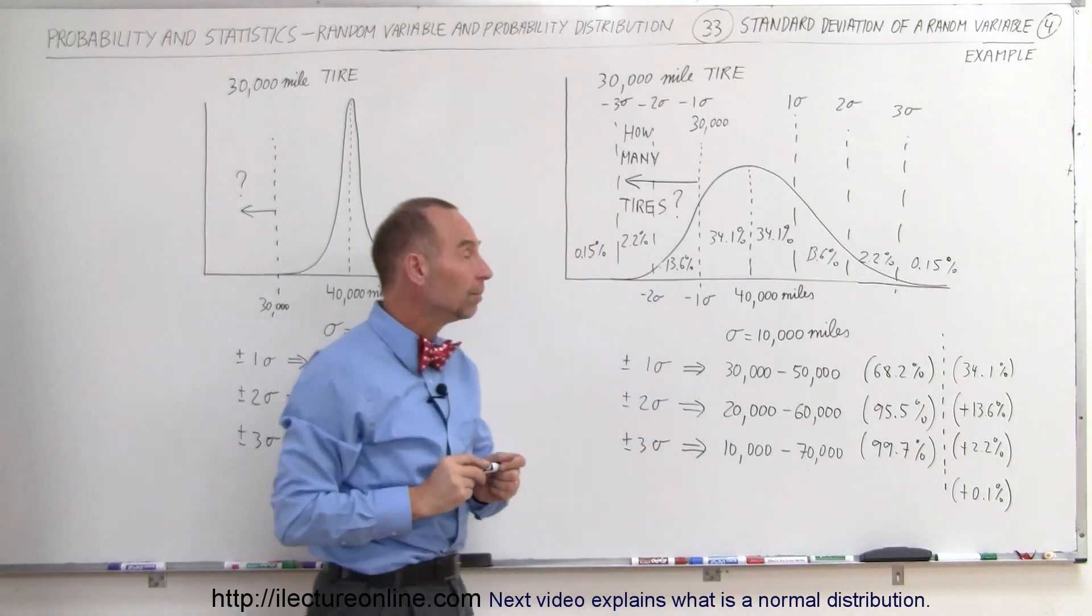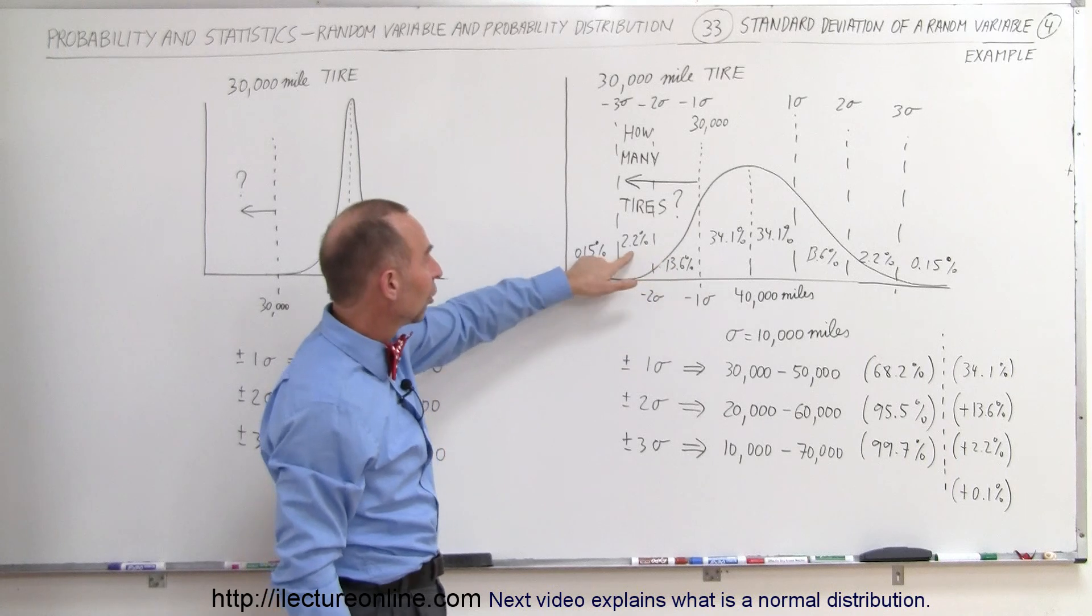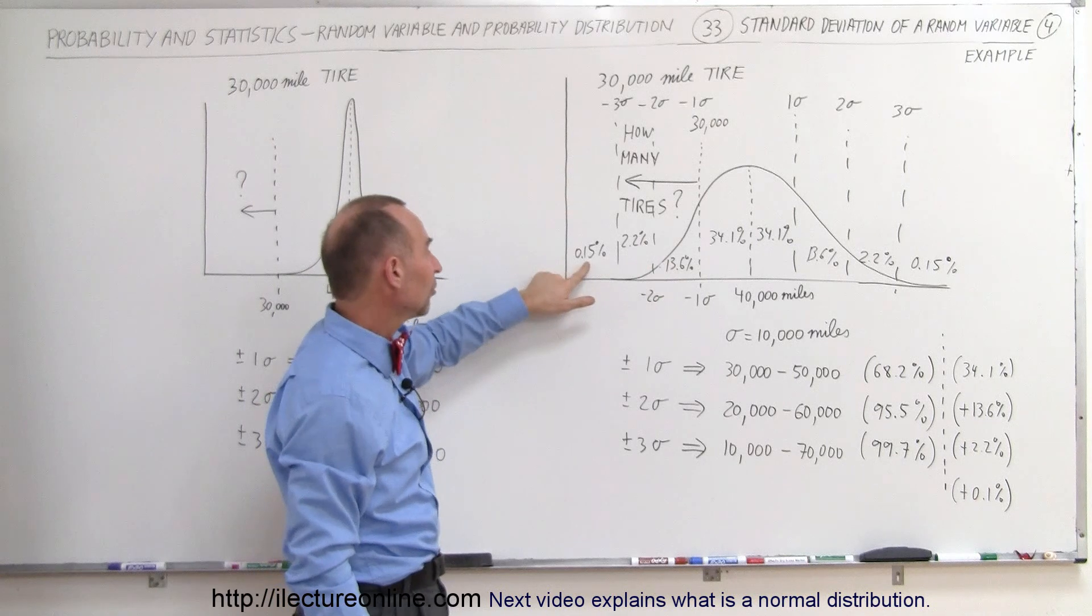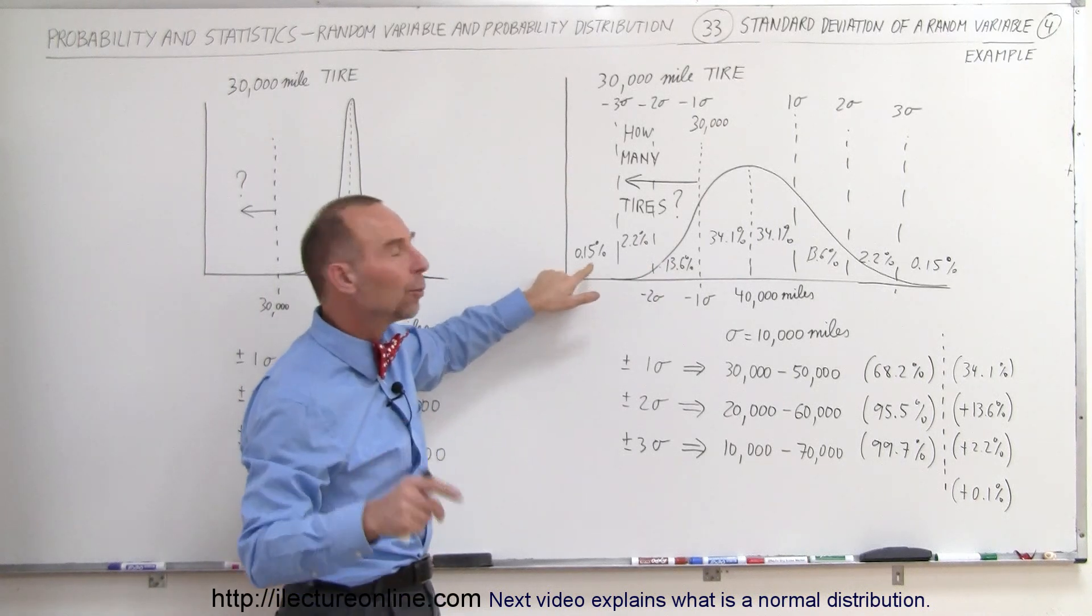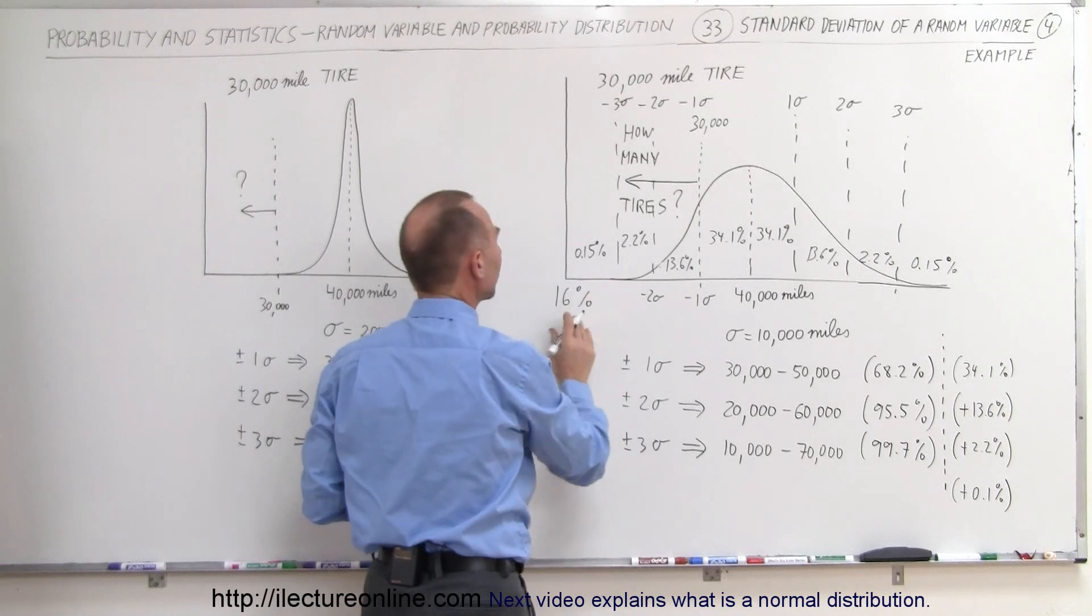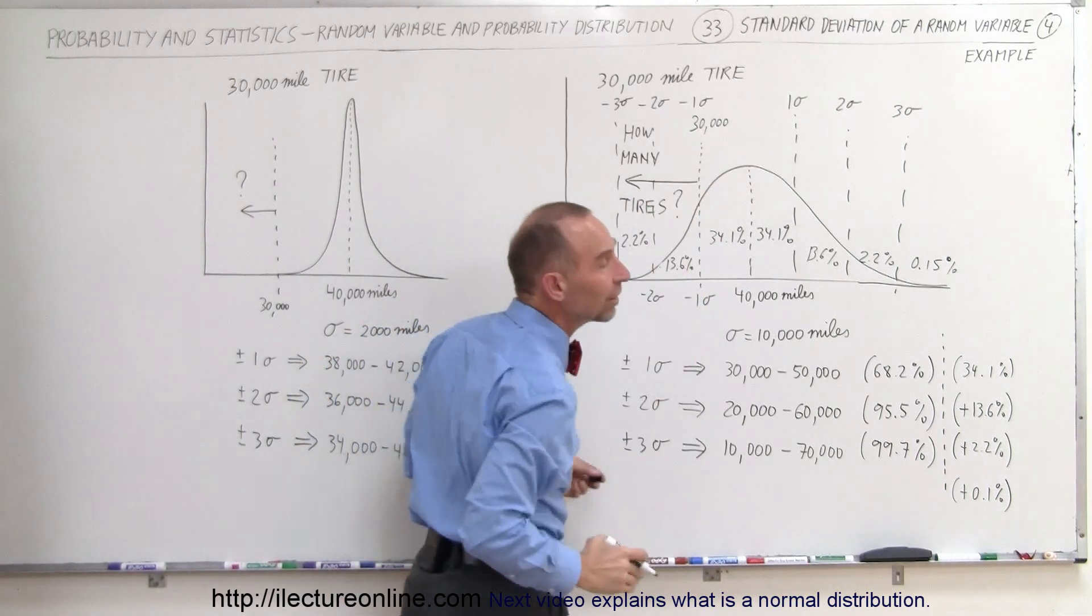But now imagine that if you add these together, 13.6%, 2.2%, that would be 15.8% plus another 0.1% that would be 15.9%. And round it off, that would be about 16% of all the tires would have a mileage that would be less than the rated mileage, less than 30,000.